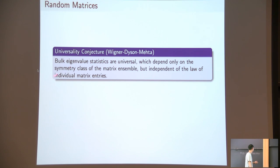The bulk eigenvalue statistics, like quantities like this, should only depend on the symmetry of the matrix ensemble, either it's real symmetric or complex Hermitian. But this kind of statistics should not depend on the details of the model, especially the law of those individual entries.